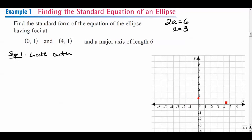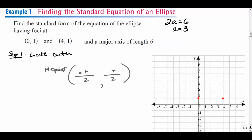Plotting the foci at (0, 1) and (4, 1), we need to find the center. The center is the midpoint between both foci. Using the midpoint formula: (0+4)/2 and (1+1)/2, we get the center at (2, 1). With the center found and a = 3, we use the relationship c² = a² − b². We don't immediately know c or b, but c is the distance from the foci to the center.